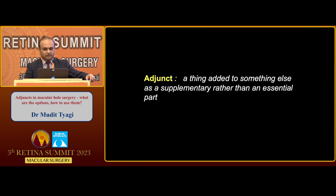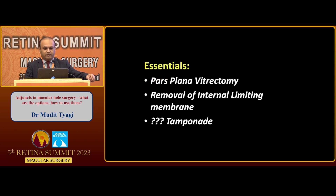Now, what do we mean by the word adjunct? Adjunct essentially is a thing which is added as a supplement rather than an essential part. So that brings us to the question: what are the essentials? We have had multiple talks till now — pars plana vitrectomy and removal of the internal limiting membrane are essentials. And we have just had a talk about the role of tamponade — whether it's essential or not is something which is debatable.